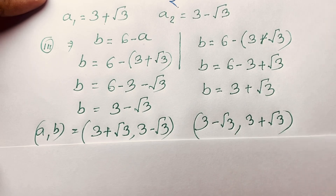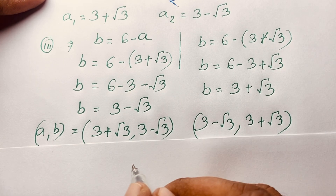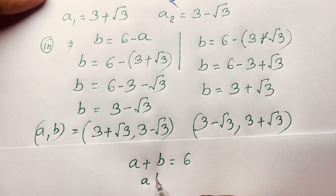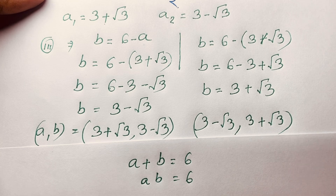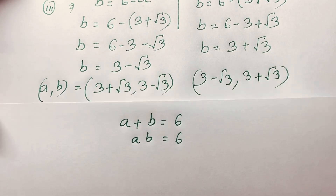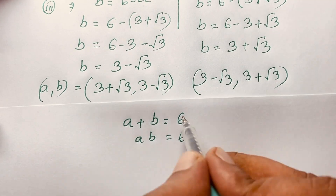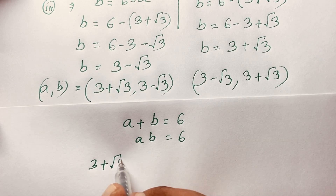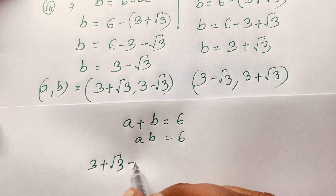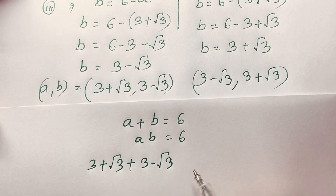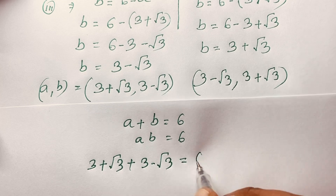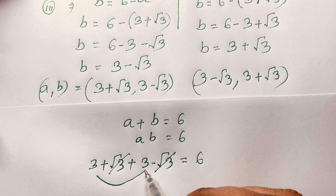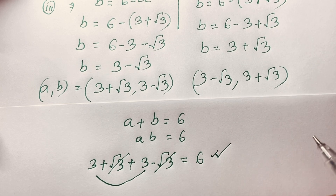Let's check our question. A plus B equals 6 and A times B equals 6. Let's verify. First of all, I add A and B: with A equals 3 plus square root of 3 and B equals 3 minus square root of 3, the square root terms cancel out and 3 plus 3 is always 6. So left-hand side and right-hand side are equal.